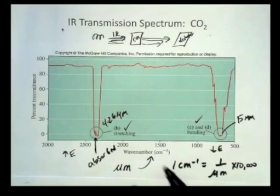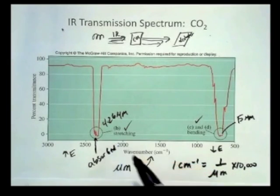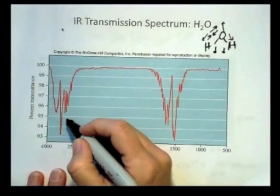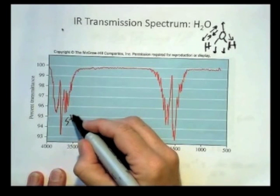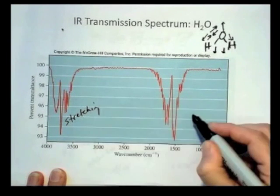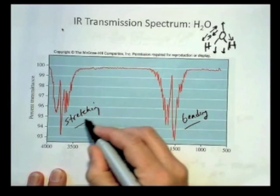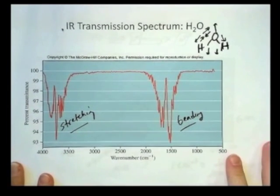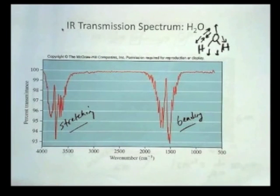If you look back at the carbon dioxide, the stretching takes more energy. So we would guess that the stretching absorptions are here and the bending absorptions are down here. So it's a molecule with more than two atoms, so it's capable of undergoing stretching and bending, and we see different absorptions for water as well.